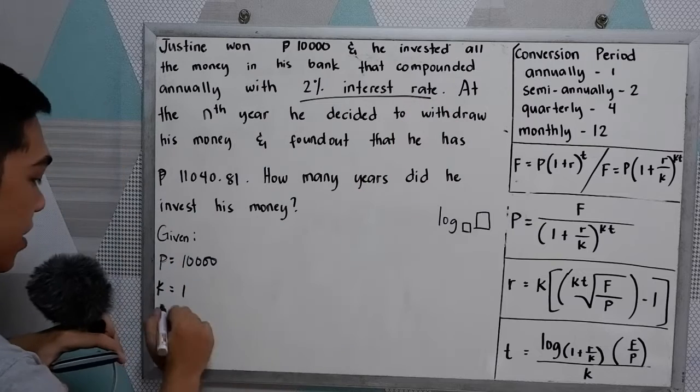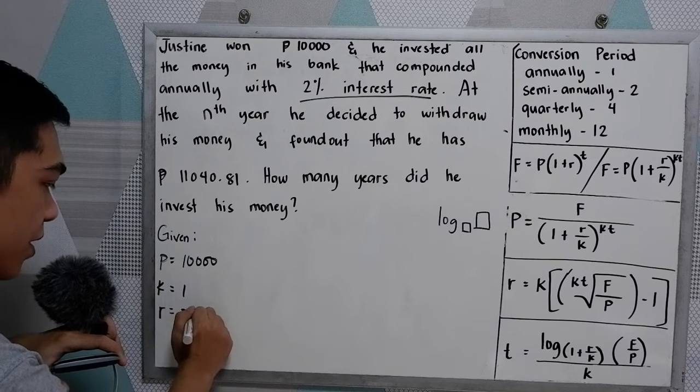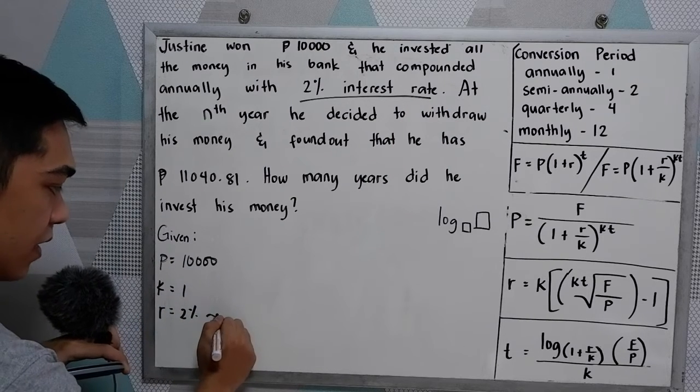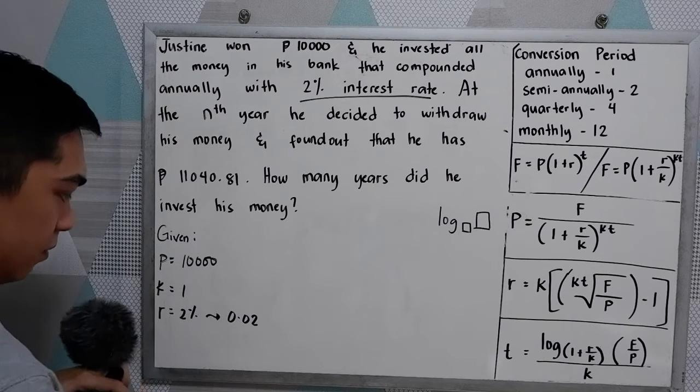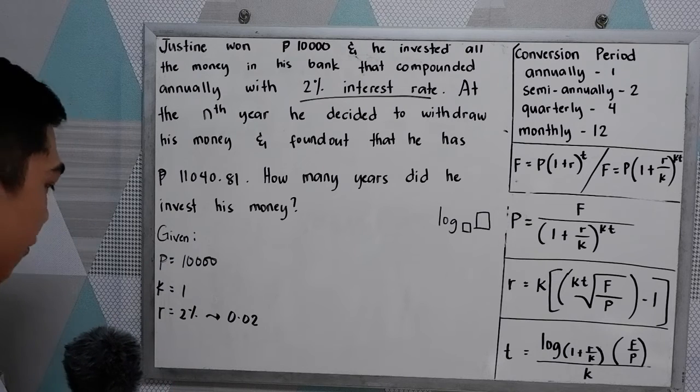Then interest rate, 2%. Rate is 2%. In decimal, that is 0.02. Just move twice to the left.